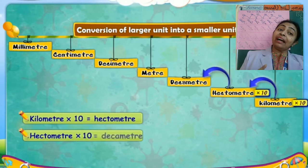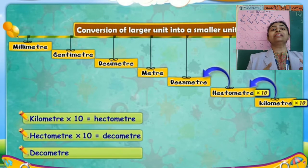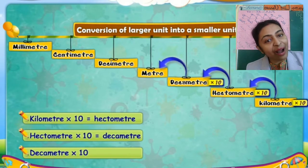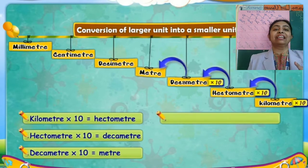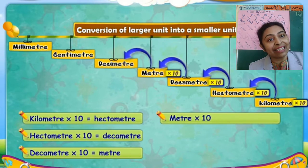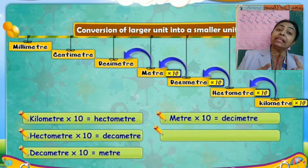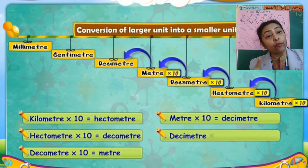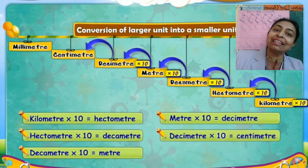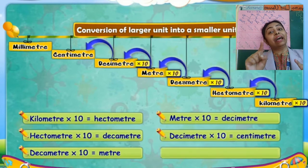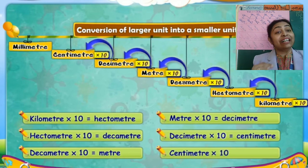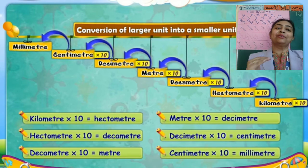Now decameter — if you multiply by 10, you will get meter. From meter, if you multiply by 10, you will get decimeter. From decimeter, if you again multiply by 10, you will get centimeter. Then this centimeter, if you multiply by 10, you will get millimeter. So students, that's how we convert from large unit to small unit.